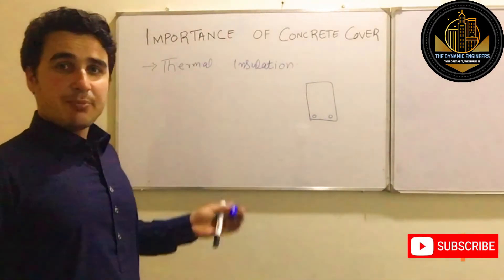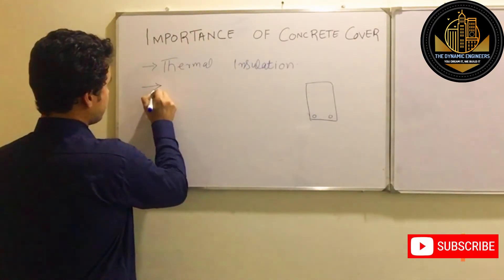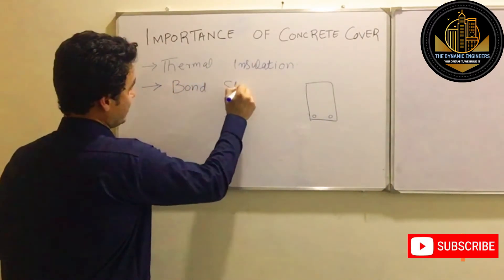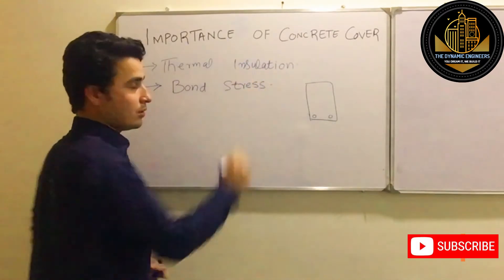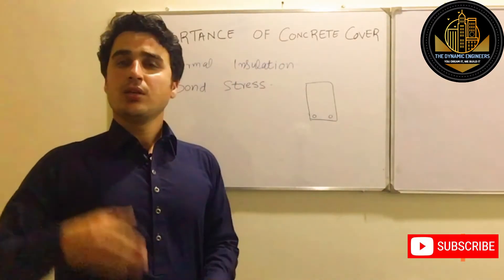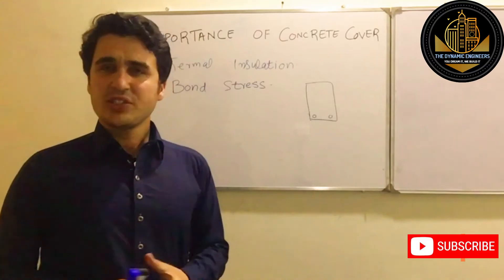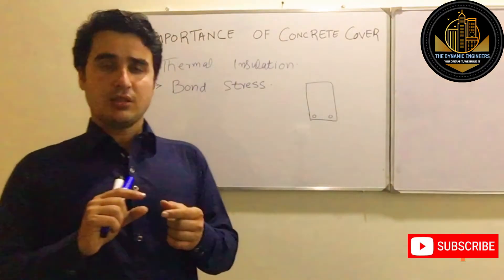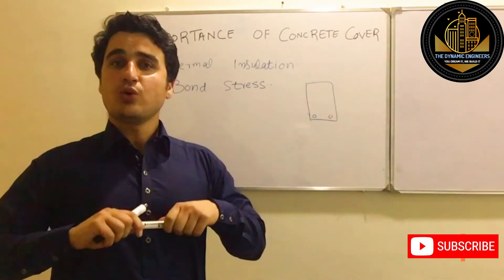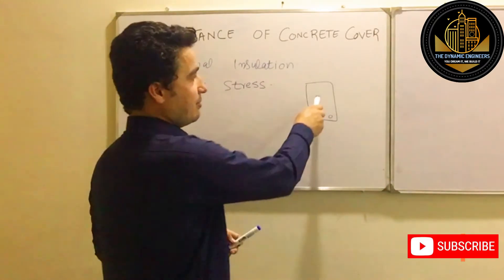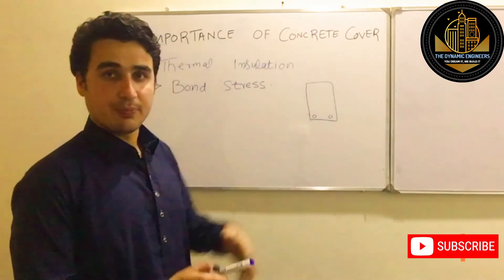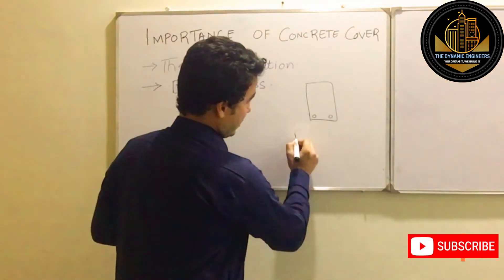The second importance is bond stress. Bond stress is actually a structural aspect of concrete cover. Bond stress is the stress produced whenever any steel bar tries to pull out of a concrete member. For example, with this beam — when a load is applied over this beam — looking at the long section of the beam, the load is applied and there is a bar inside.